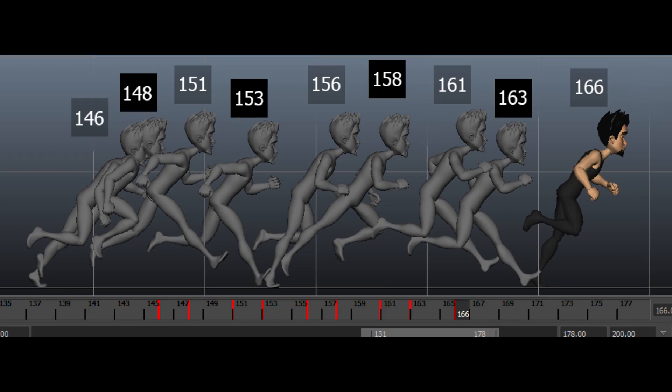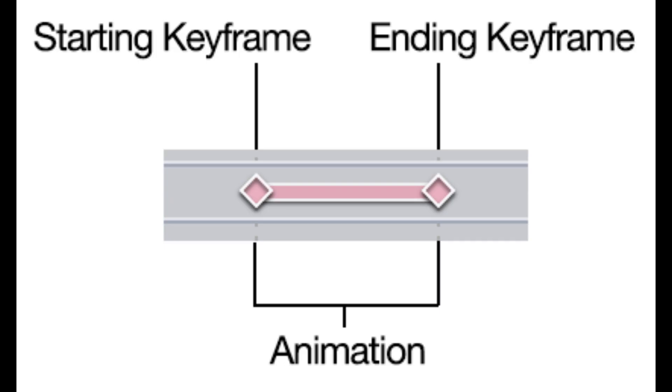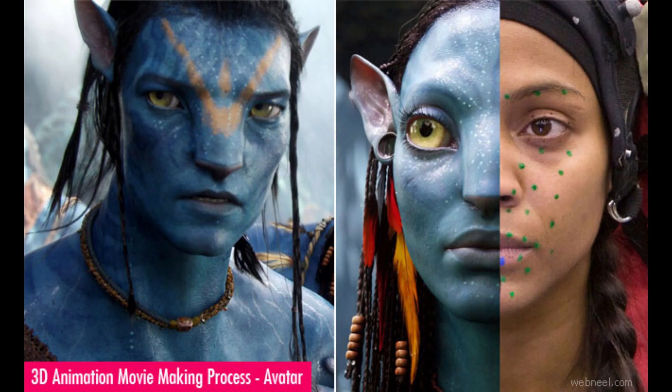Number 5: Animation. Animation is the process of taking a 3D object and getting it to move. There are different types of animation: keyframe animation, where we add movement to our character frame by frame; path animation, where we add a path for an object to follow; and the most advanced, motion capture, where we use real-life video to give our object movement data.